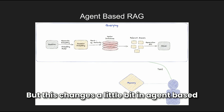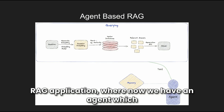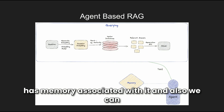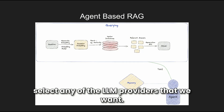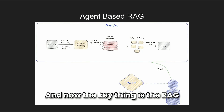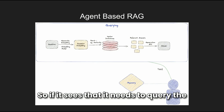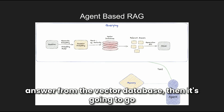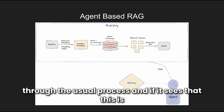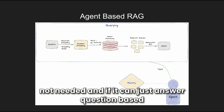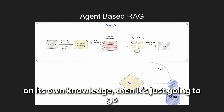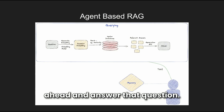This changes in an agent-based RAG application, where now we have an agent with memory associated with it, and we can select any LLM provider we want. The key thing is that the RAG query pipeline becomes a tool for this agent. If it needs to query the vector database, it will. If it can answer from its own knowledge, it just goes ahead and does that.